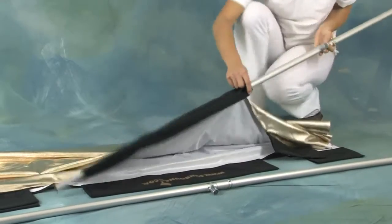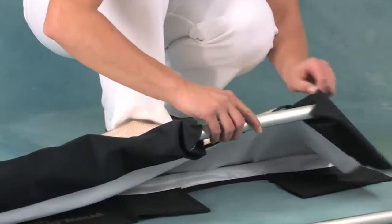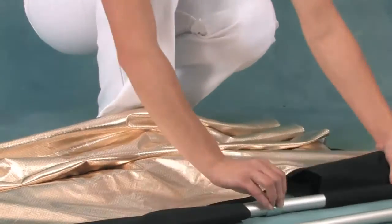Slide the pole into the sleeve along the screen. Ensure that the end of the pole protrudes beyond the end of the sleeve. This will give you enough room to guide the pole into the fabric pocket at the other end of the screen.